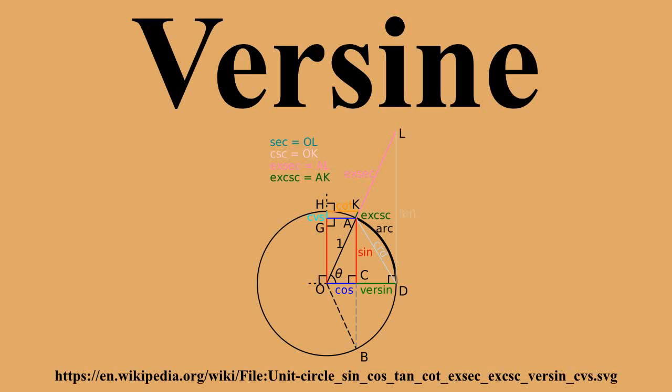The versine is a trigonometric function already appearing in some of the earliest trigonometric tables. It is written as versen, sinver, vers, ver or siv.